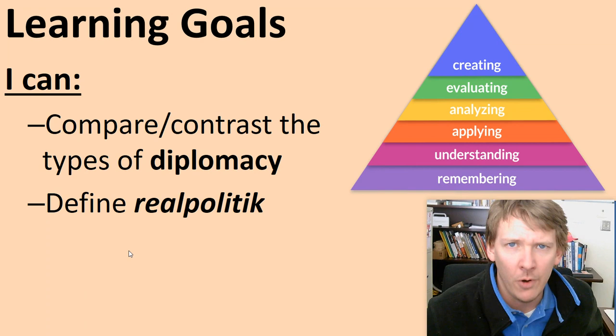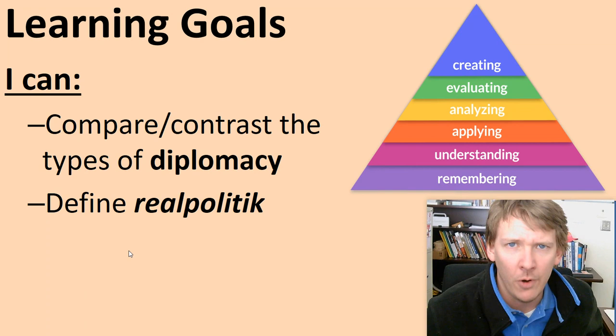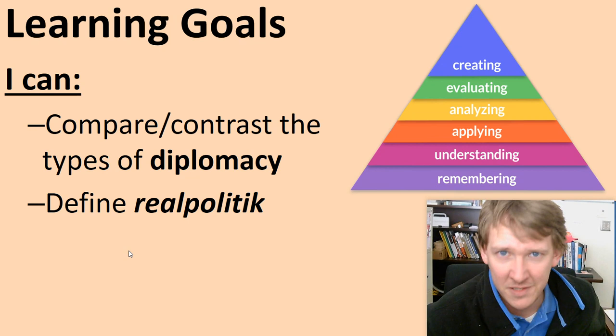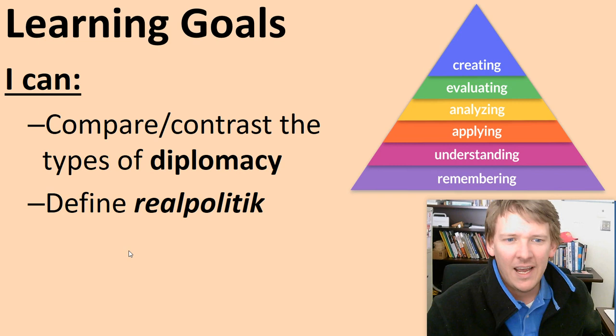Compare and contrast the different types of diplomacy: gunboat, big stick, moral, dollar. You could say they're different, but they're all the same thing — it's imperialism, folks. We're taking over other countries and exploiting their markets. And what is real politic? It's making government policies based on practical plans instead of fantasy and ideology.